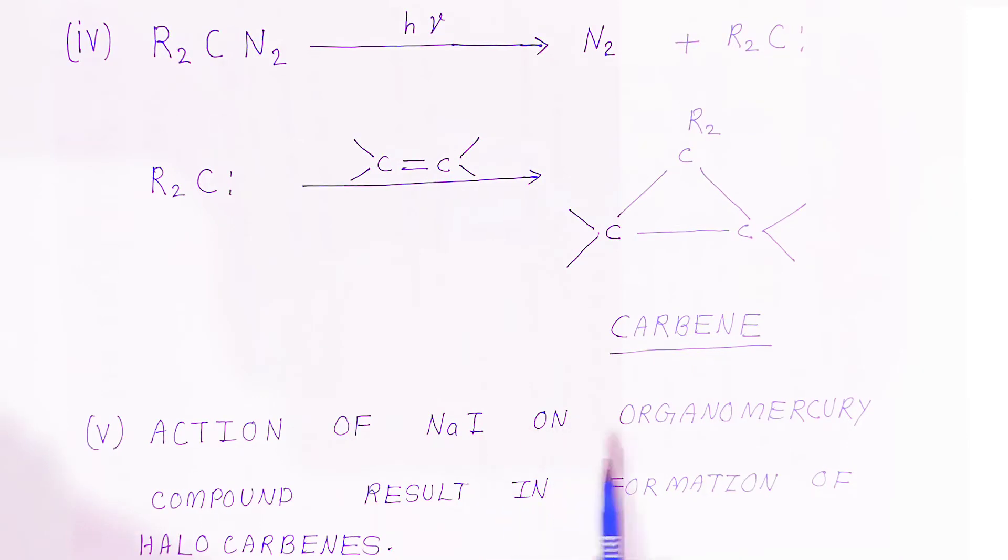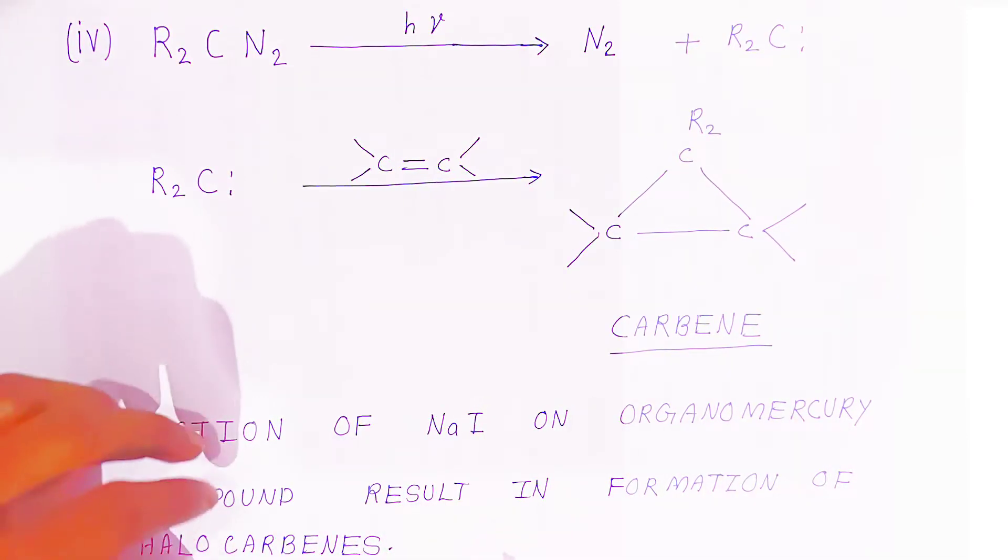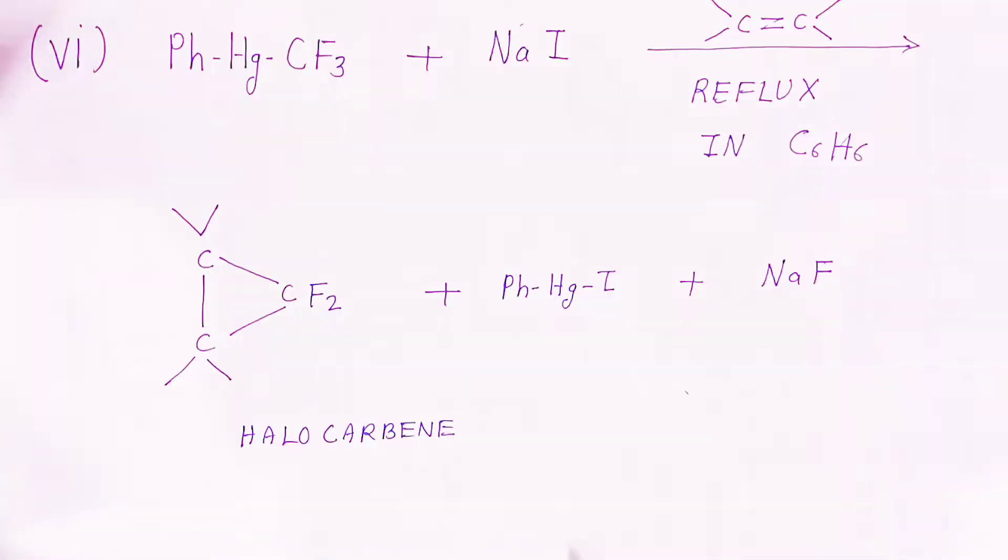Action of sodium iodide on organomercury compound results in the formation of halocarbenes. You can also prepare halocarbenes in this way.